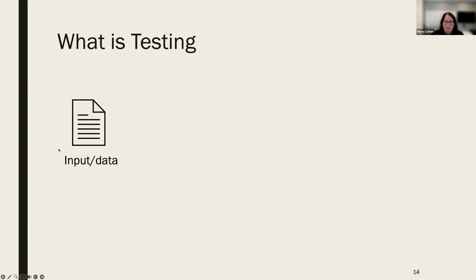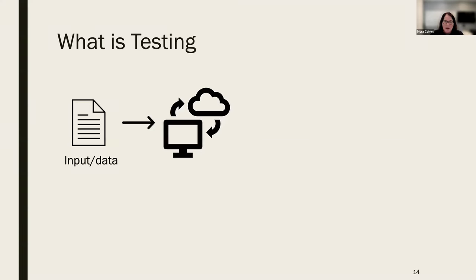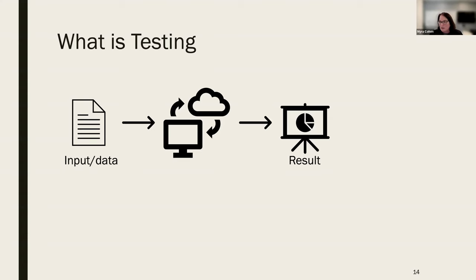Testing takes some input — in the scientific world this can be simple integer or string inputs, but it may be large models: a climate model, a model of some biology, gates in a quantum environment, signals, or pictures. Then it has to actually run on a software system — we need an actual instantiation of the software we're going to be testing. And then we get a result. This is the core of what happens in software testing.